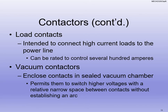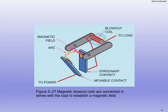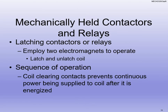We can also use vacuum contactors for special situations where we need to switch higher voltages and narrow the space between them without arcing as much — there's really nothing in a vacuum for it to arc on. We can also use magnetic blowout coils to help establish a magnetic field as current goes through it, giving off a magnetic field to open, close, or blast those contacts.